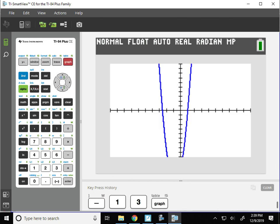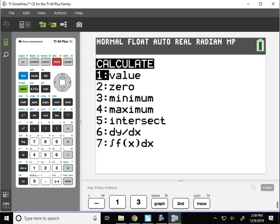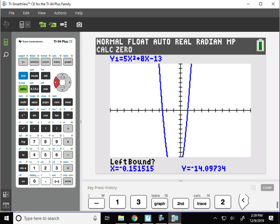I can see both roots on my graph, so I'm going to use the trace feature. I'll hit second, trace, and option number 2, which is zero, because we're finding the zeros of the function.